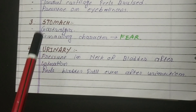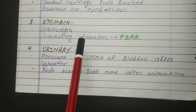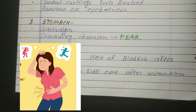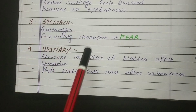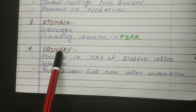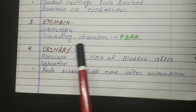The third topic is stomach. The stomach symptom is gastralgia with a gnawing character — meaning you feel pain in the stomach with a gnawing, biting sensation. The fourth point is urinary bladder.